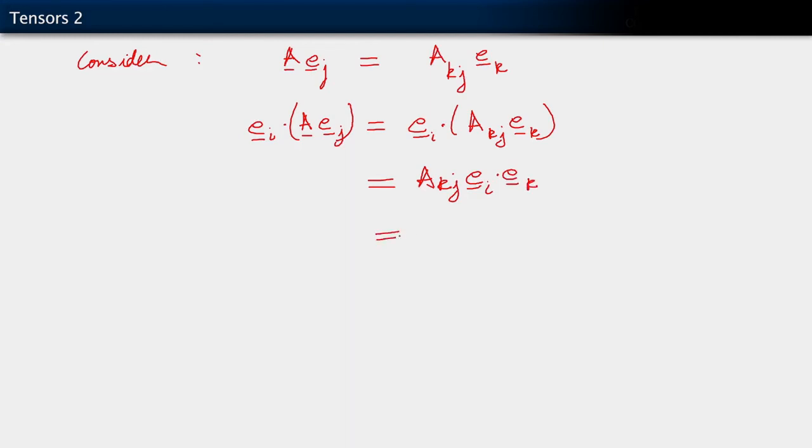And along comes our steady companion in continuum mechanics, the Kronecker delta. And what does it do? It acts upon the right-hand side to turn the k index on A into the i index. So what we see is that these components that we came across, or these new objects that we came across, the A sub i j, can be defined as appears on the left-hand side now.